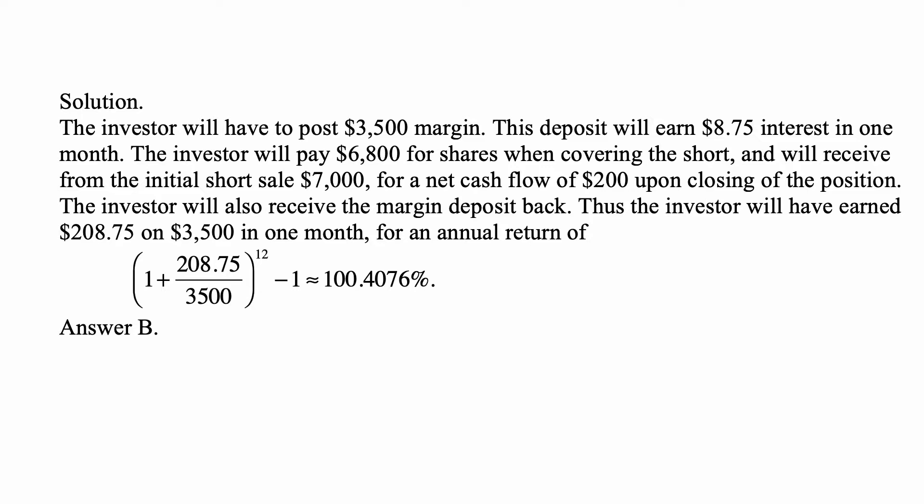Thus, the investor will have earned $208.75 on the capital of $3,500 in one month, for an annual return of (1 + 208.75/3500)^12 − 1, and that's 100.4076% annual effective rate of return, which is answer B.